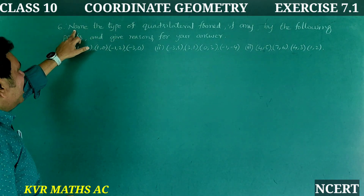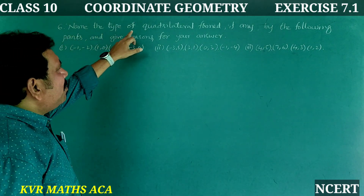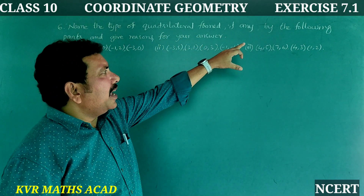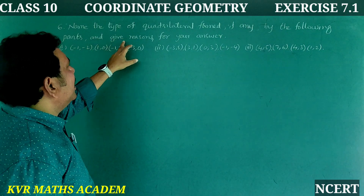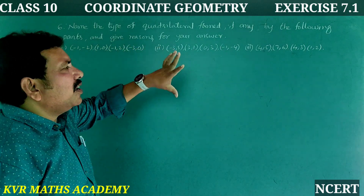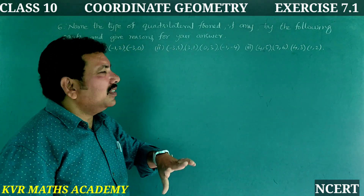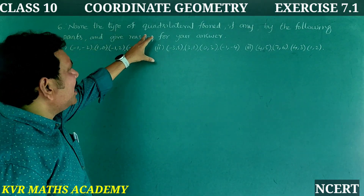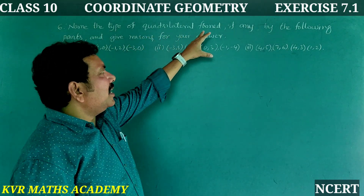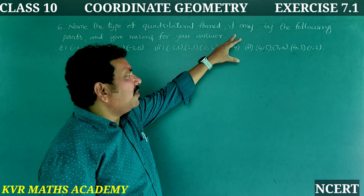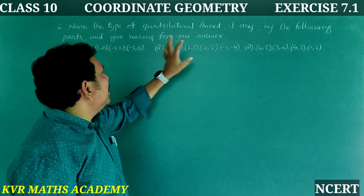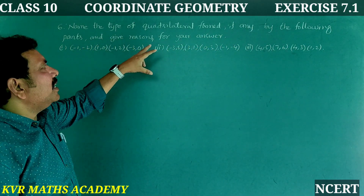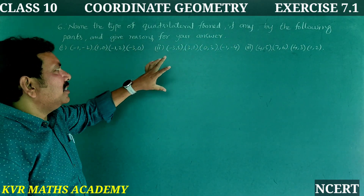6th question: Name the type of quadrilateral formed, if any, by the following points and give reasons for your answer.